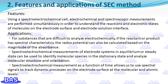For substances that are difficult to analyze electrochemically, if the reactant or product has spectral characteristics, the redox potential can also be calculated based on the magnitude of the absorbance. Spectro-electrochemical measurements of electrode systems in equilibrium or steady state can be used to identify molecular species in the stationary state, and analyze molecular structure and orientation. Spectro-electrochemical measurement as a function of time allows us to use spectral signals to track dynamic processes on the electrode surface at the molecular and atomic levels.